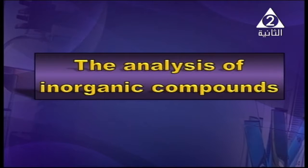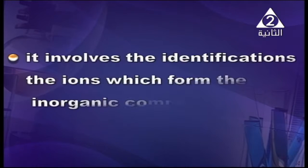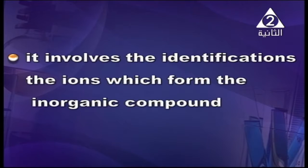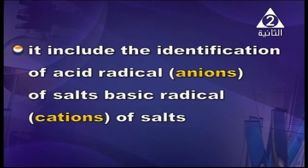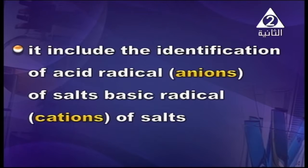The analysis of inorganic compound has identification of the ions. This is important — analysis of ions. The compound will go back to its components: the positive ion and the negative ion, which form the inorganic compound. This includes identification of acid radicals — the anion — because it's negative. Acid radical is the anion of the salt. Basic radical is the cation, because it's positive.